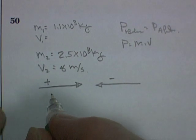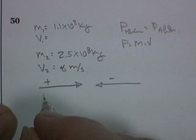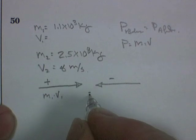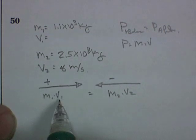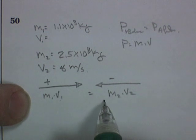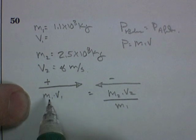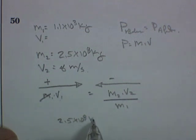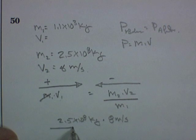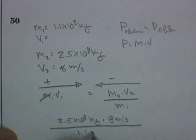So the momentum of the car, mass times V1, is going to be equal to the momentum of the van, M2 times V2. If we want to know the velocity of the car, we simply divide both equations by the mass of the car. And that gives us the velocity of the car, so we can say 2.5 times 10 to the 3 kilograms times 8 meters per second, divided by 1.1 times 10 to the 3 kilograms, and that's going to be equal to our velocity afterwards.